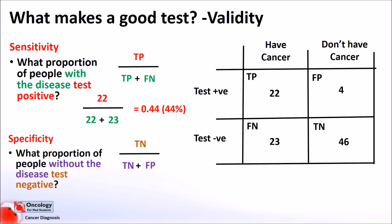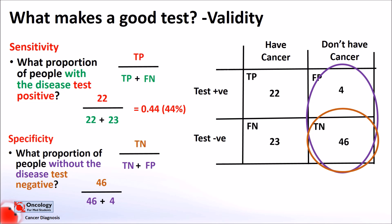For specificity, which is the ability of the test to correctly identify people without the disease, we take the number of people who don't have the cancer — true negatives and false positives — 46 plus 4. We then divide the number of true negatives by this to find out what percentage of people without the disease will get a negative result. This comes out as 96%, so 96% of people who don't have the disease were correctly identified with a negative result. The remaining 4% got a positive result but didn't have the cancer. A specificity of 96% is pretty good — it means that only a small number of people without the disease will test positive and go on to have unnecessary investigations.